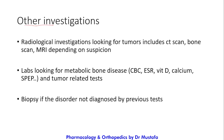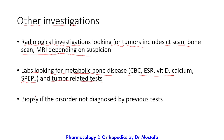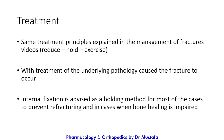Other investigations include radiological studies such as CT scans, bone scans, and MRI to look for tumors. Lab tests for metabolic bone disease include CBC, ESR, vitamin D, calcium, serum protein electrophoresis, and tumor-related tests. Biopsy should be performed if the disorder is not diagnosed by the previous tests.